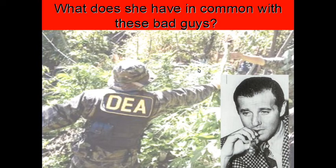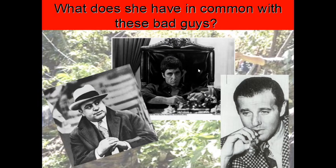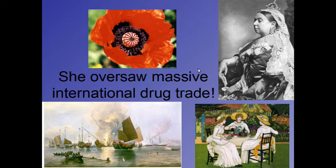What did Queen Victoria have in common with these figures — a DEA agent cutting down marijuana plants, Scarface, Al Capone, and another mobster? Why is the Queen of England alongside drug lords? There's a simple answer: there's a drug. Any guesses? Opium. She oversaw a massive international drug trade in opium — a drug from which morphine and heroin come. You can also smoke it as an extract of the opium poppy.